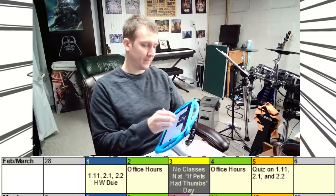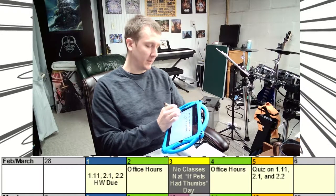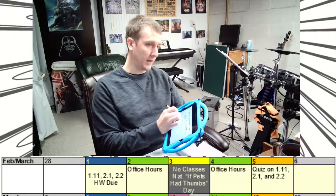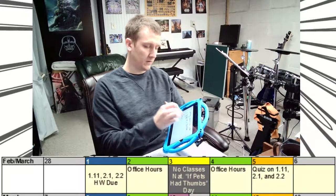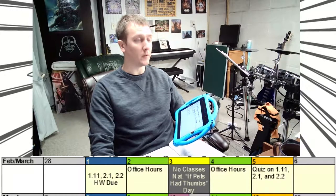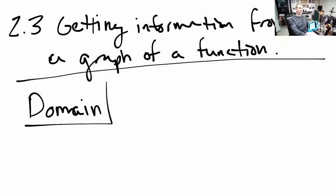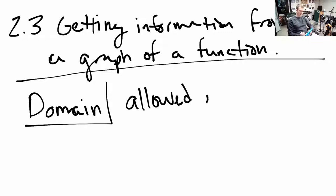So let's go ahead and jump in. The first thing we're going to look at is finding the domain of a function. The domain, as you know, is the allowed inputs — all the real numbers that are allowed to be plugged in.